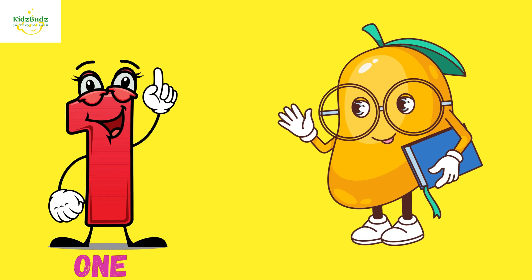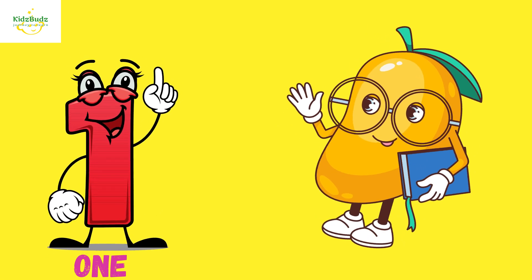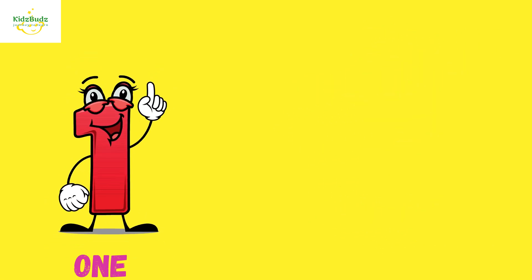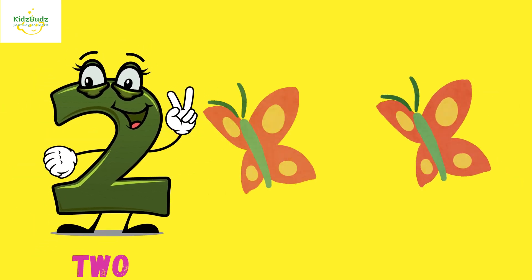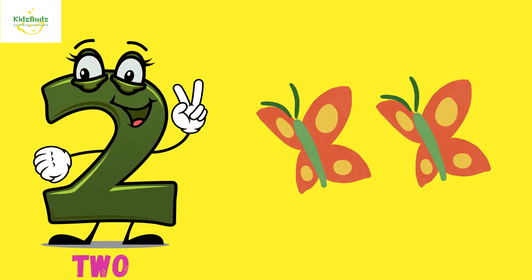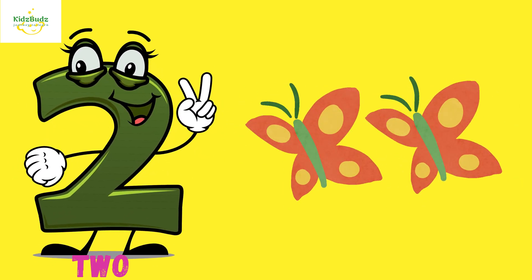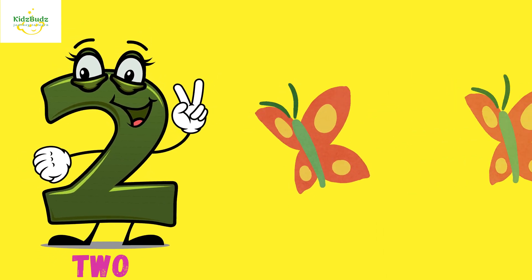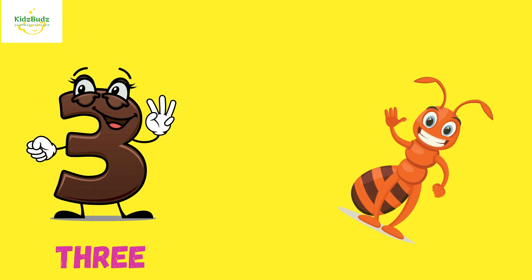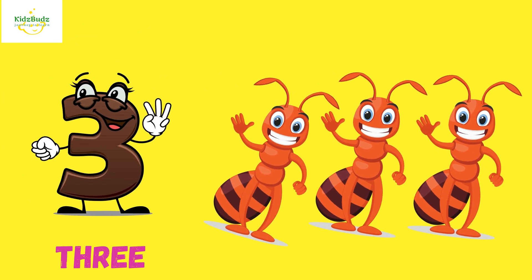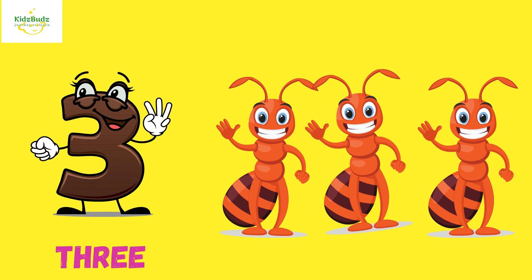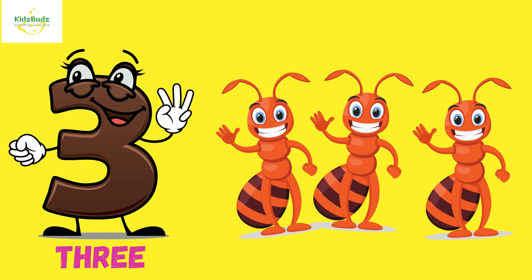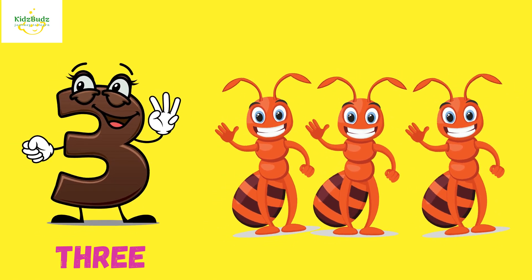1. O-N-E — 1 Mango. 2. T-W-O — 2 Butterflies. 3. T-H-R-E-E — 3 Ants.